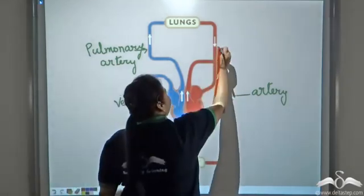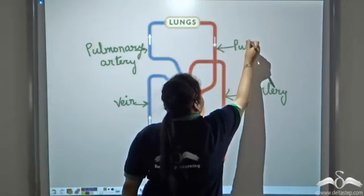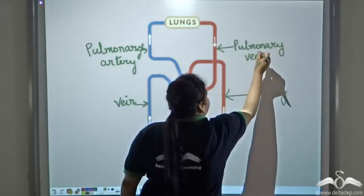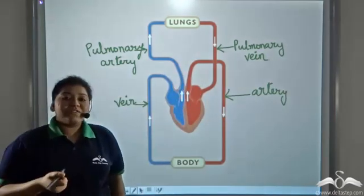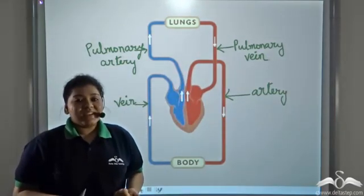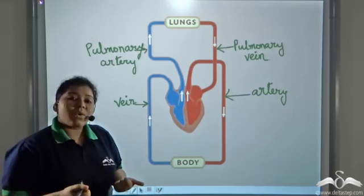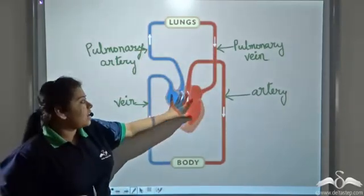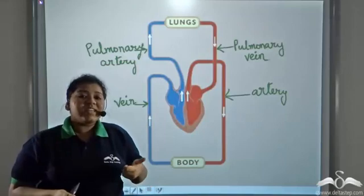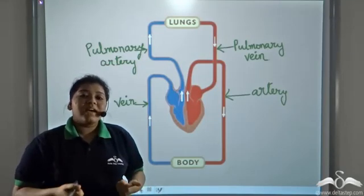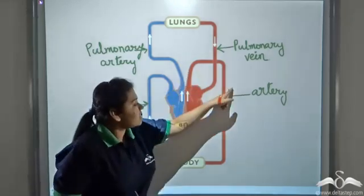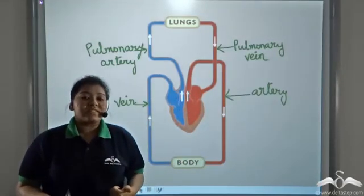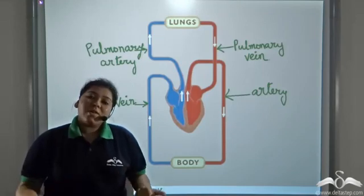So the vessel that carries oxygenated blood from the lungs to the heart is a vein. It is known as the pulmonary vein. The pulmonary vein is the only vein in the body that carries oxygenated blood — it carries oxygenated blood from the lungs to the heart. This circulation consisting of the heart and the lungs is known as pulmonary circulation, and the circulation consisting of the heart and the body is known as systemic circulation. Systemic means all the systems of the body.